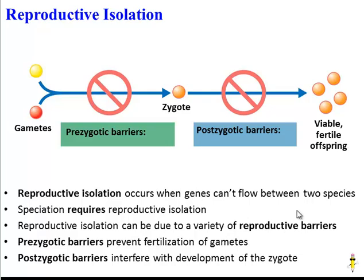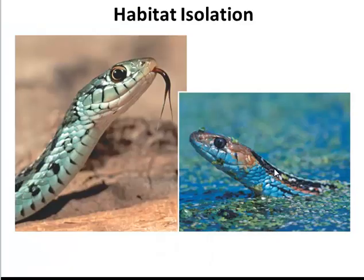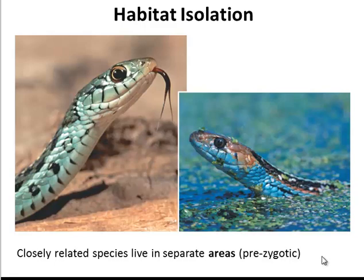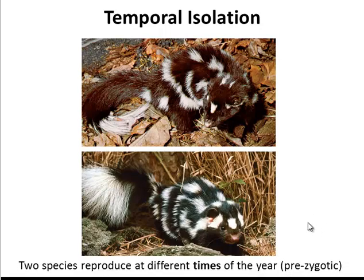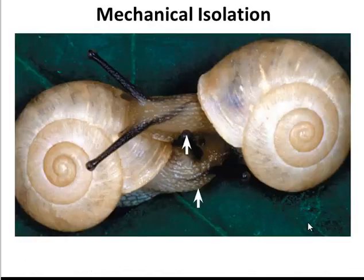Let's take a look at some examples of pre- and postzygotic barriers. Habitat isolation is a prezygotic barrier where two very similar species might not reproduce because they live in different areas — like this snake lives on land, but this snake species lives in the sea. Temporal isolation has to do with time. These two skunk species are very similar, but they reproduce at different times of the year, so that prevents their zygotes from ever forming.